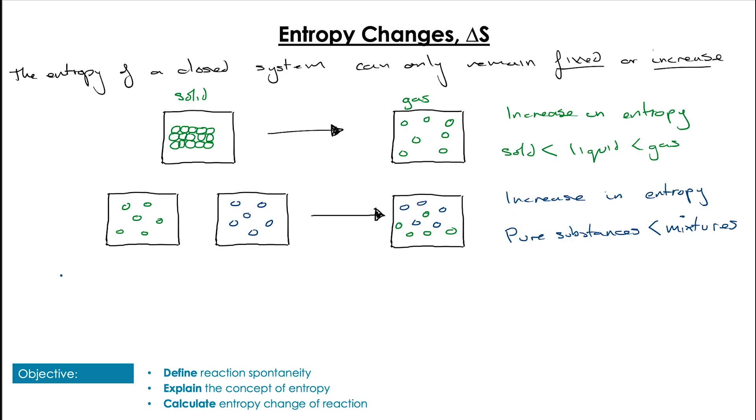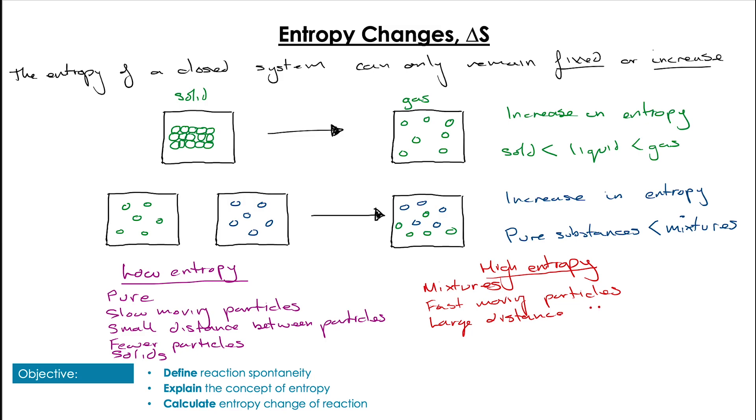We can summarize low entropy and high entropy by saying that in general low entropy systems are pure substances, slow moving particles with small distances between them, there aren't as many particles and maybe more solids. Whereas high entropy we would say more likely to be mixtures, fast moving particles with a large distance between them with more particles and then more likely to be gases.